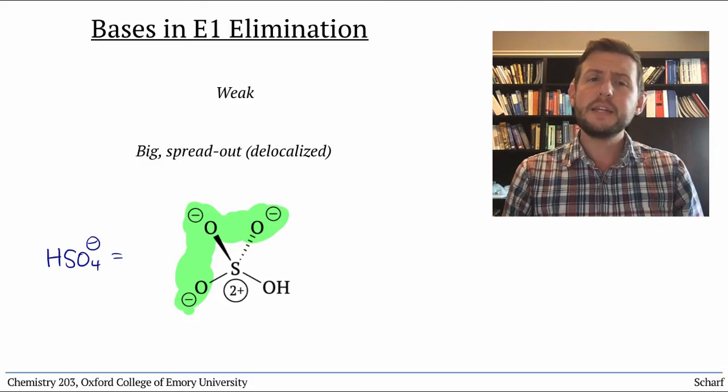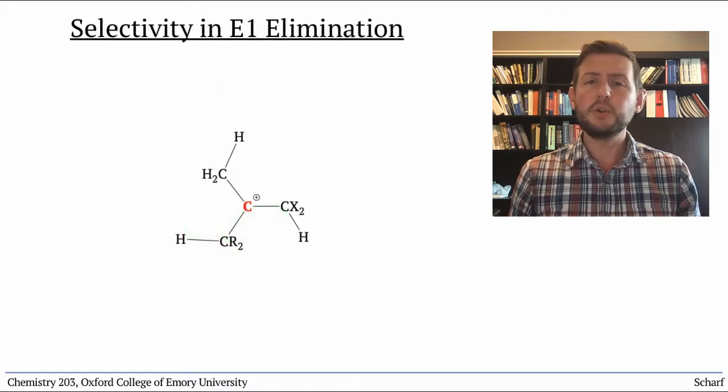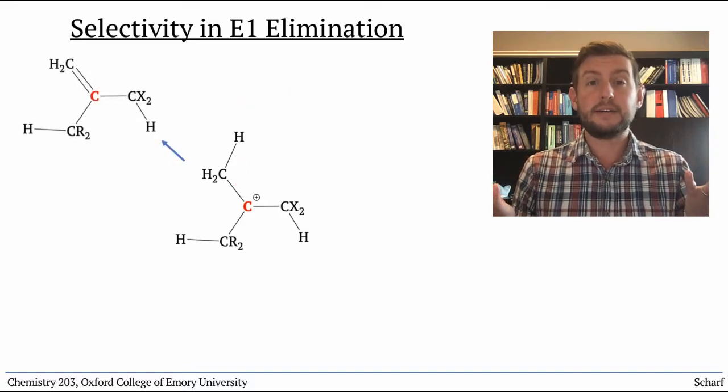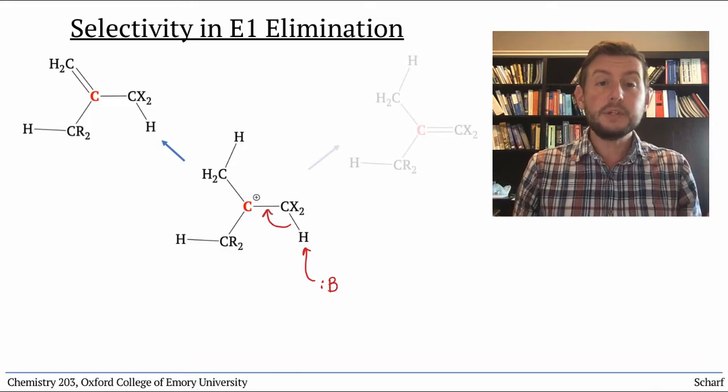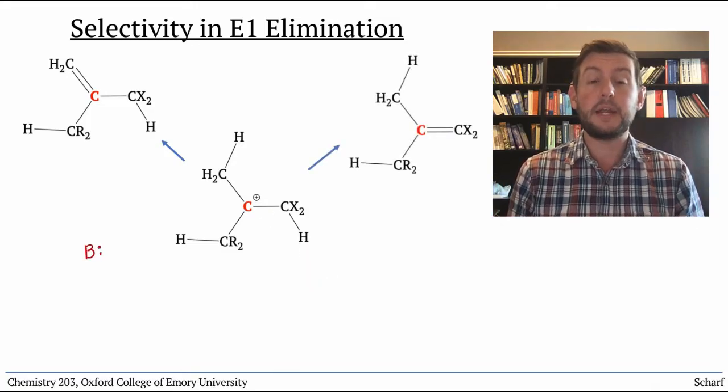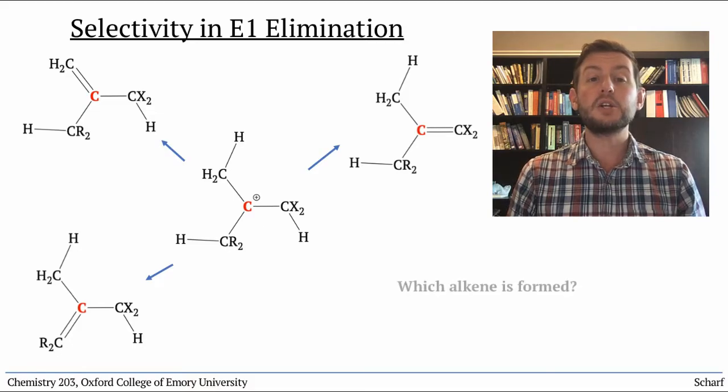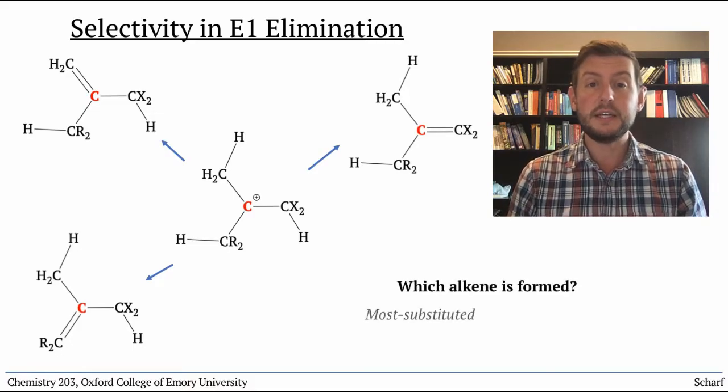The final thing we need to think about is, what if multiple different hydrogens are adjacent to the carbocation? Which one will be deprotonated? And where will the new alkene form? In principle, any of them could be deprotonated, but we tend to see a preference for the formation of the most substituted, and therefore most stable, alkene.